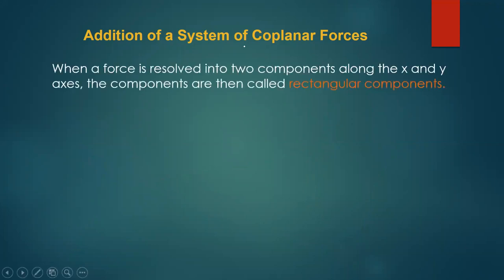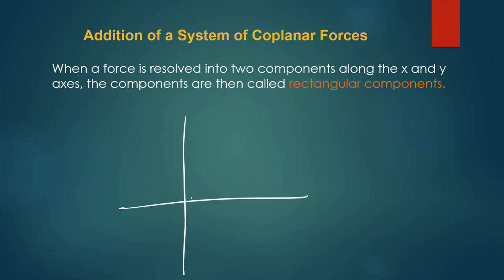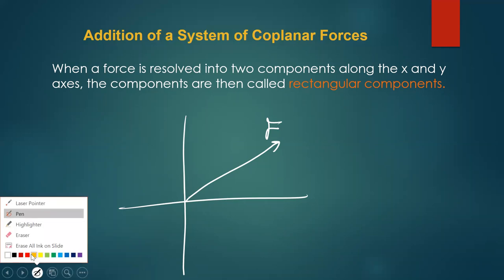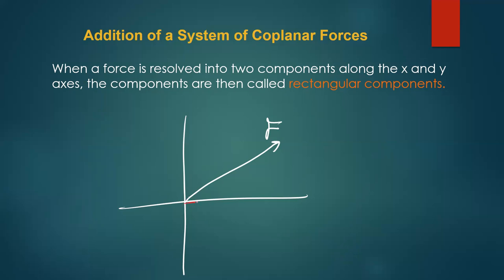When a force is resolved into two components along the x and y axes, the components are called rectangular components. If you have a force F resolved into two components — F in the x and F in the y — these two forces are known as the rectangular components. On top of that, we also have what are known as scalar and Cartesian components, which we're going to discuss.